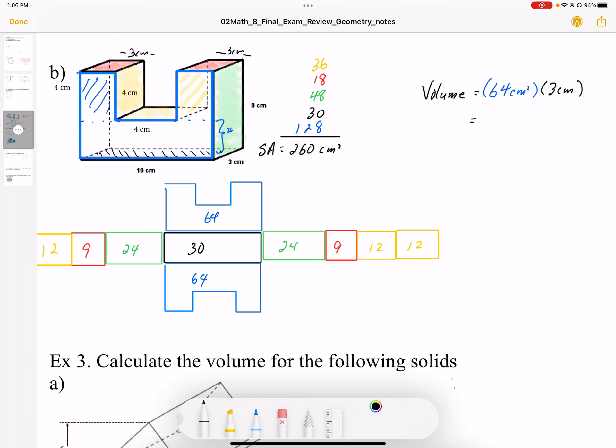So then the volume works out to be 192 centimeters cubed. And again, I'm using the area times thickness to work out the volume. So there's my volume answer and there's my surface area answer.